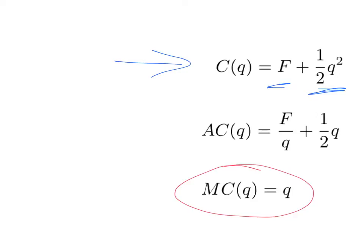That gives us an average cost function. F divided by Q is the first bit, and then one-half Q squared divided by Q — the squared just disappears — it's one-half Q. So this is our average cost function.